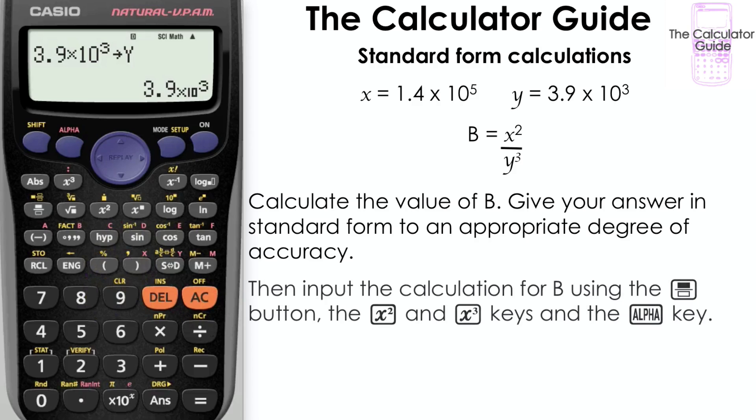For the next step, input b as it's written here in the question, using the fraction button, x squared and x cubed keys, and the alpha key to retrieve our letters.